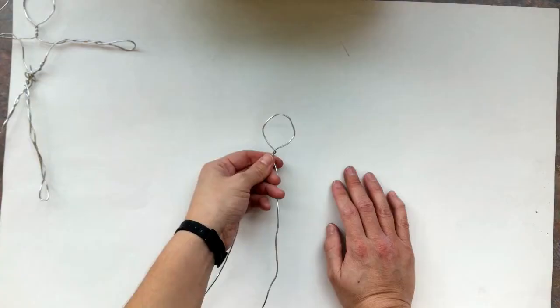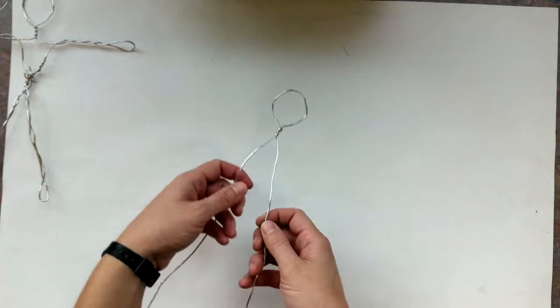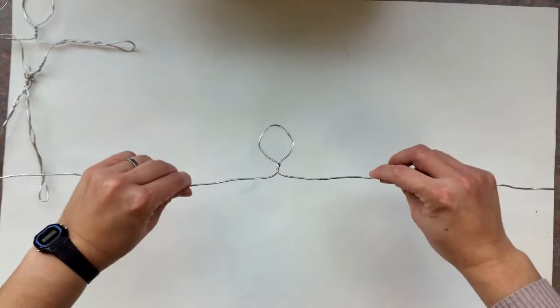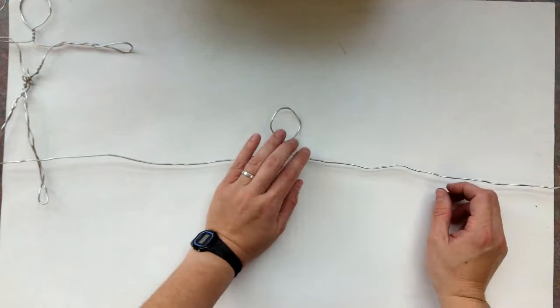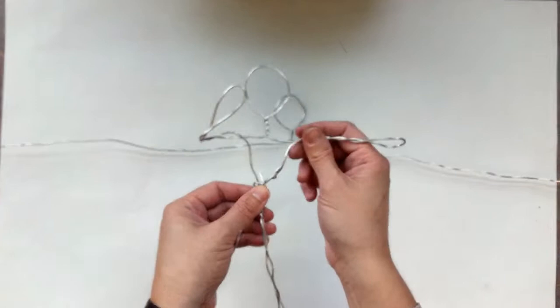So once everyone has their head, what you're going to do now is you're going to take these two ends and turn them horizontal. So I've got my head over here and one wire on one side and one wire on the other. Then I am going to create the arms. I'm going to do this arm and this arm.